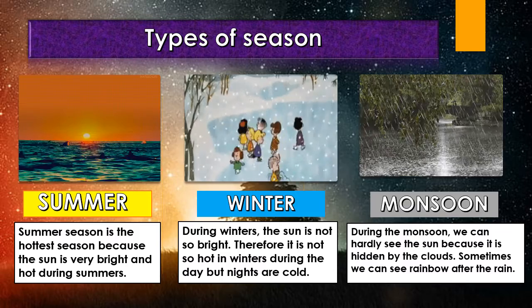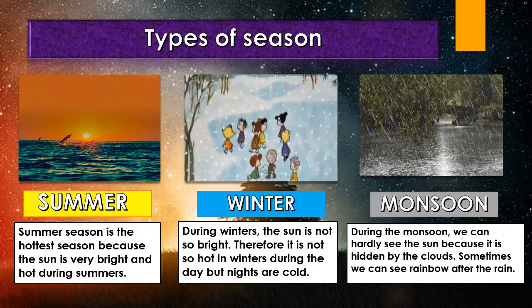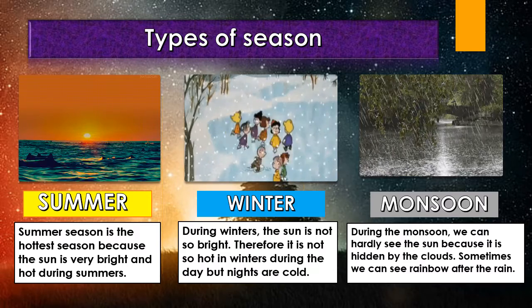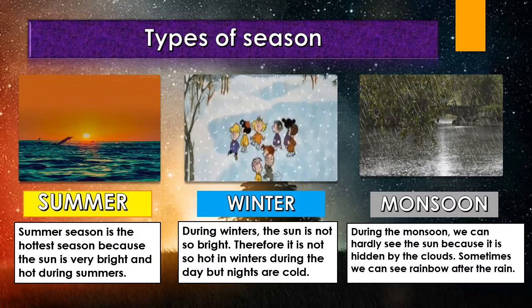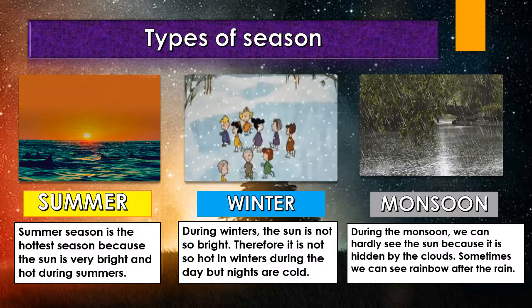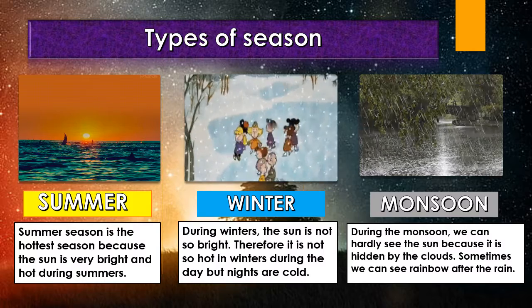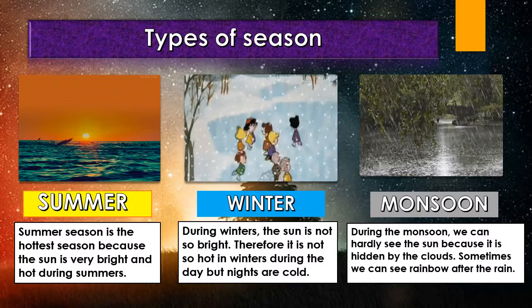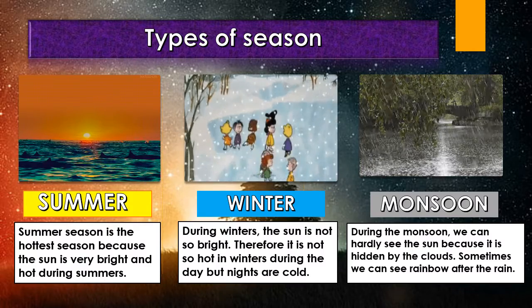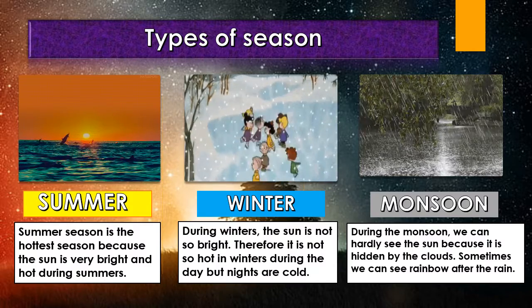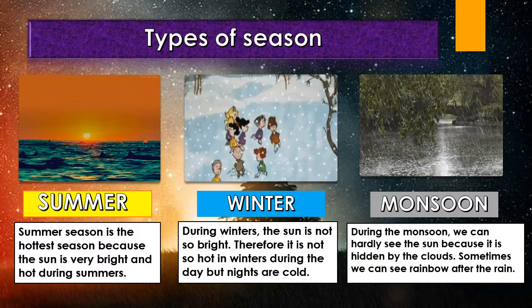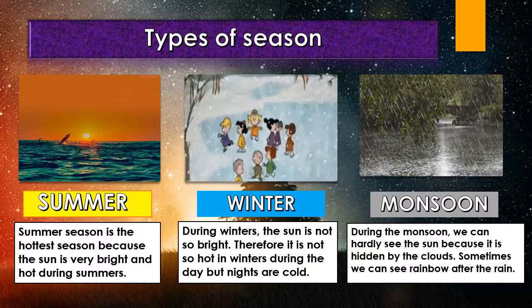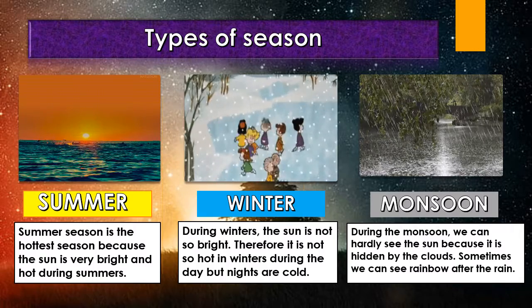So children, in summer the season is very hot. In winter it is not so hot. And in monsoon, we cannot see the sun because it is mostly covered by the clouds.